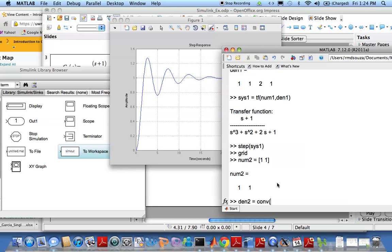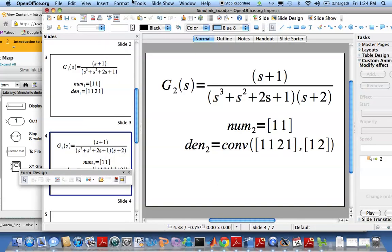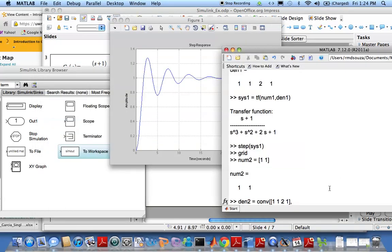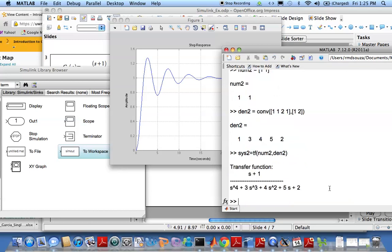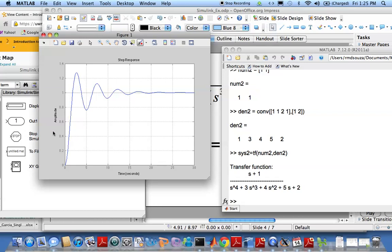And what was that? [1 2 1]. Now we can define the second system, and let me do this. I want to see both plots, one on top of the other on a single plot.